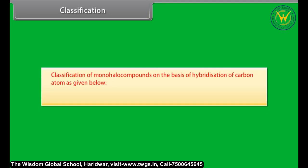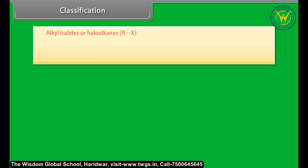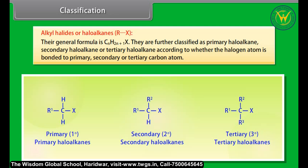Mono halo compounds are classified on the basis of the hybridization of the carbon atom. Alkyl halides or haloalkanes have halogen bonded to an sp3 hybridized carbon. Their general formula is CnH2n+1X. They are further classified as primary, secondary, or tertiary haloalkanes according to whether the halogen is bonded to a primary, secondary, or tertiary carbon atom.